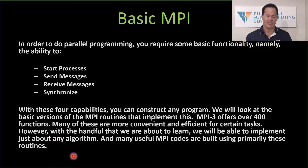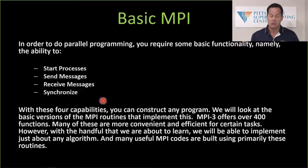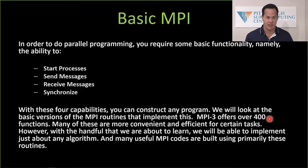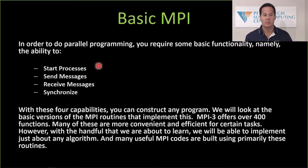To do basic MPI we need to be able to start processes up, send and receive messages, and synchronize things at the appropriate point. With these four capabilities we could build pretty much any program we want. You might say you want to learn a handful of routines — and that's technically true. MPI 3 actually has over 400 functions in it. But MPI has families of functions that group together logically. For today's exercises we'll use the dozen or so really important MPI routines that you'll find in every MPI code.